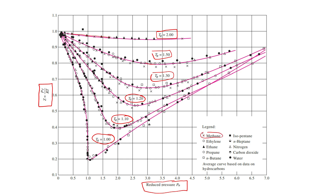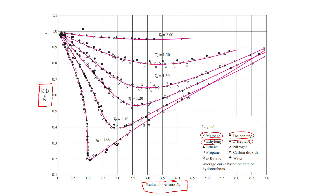Now we look at this for methane and isopentane. At TR equal to 2, the compressibility factor is almost the same for both gases. At TR equal to 1.5, it is equal to 1.5 — the compressibility factor is the same. Similarly for TR equal to 1.3, 1.2, and 1.1, the compressibility factors coincide.